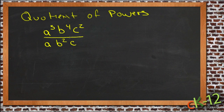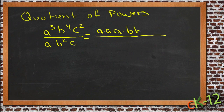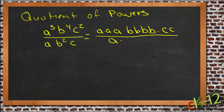The trick to this is, as usual, to recognize what the power represents and how that interacts with the numbers underneath. If I were to write this out longhand, without using the powers, I'd have a times a times a times b times b times b times c times c on top, and a times b times b times c on the bottom.